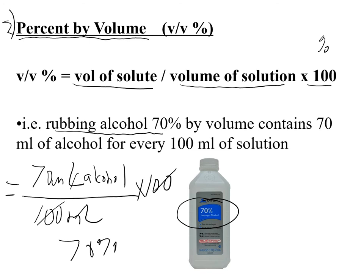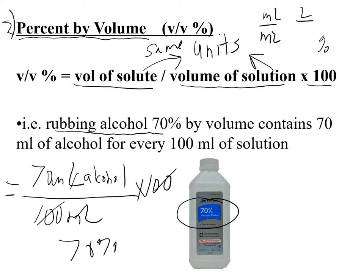The units for percent by volume just need to match — the volume of solute and volume of solution must use the same units so they cancel. In this example it was milliliters over milliliters, but you could use liters over liters or gallons over gallons, as long as the units match.